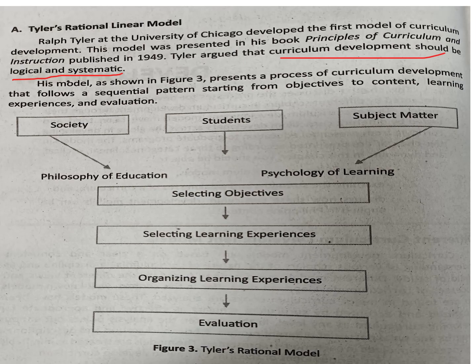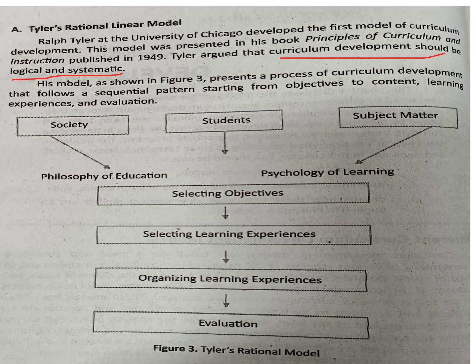In making Tyler's Rational Linear Model, we have to select the objectives. This means that a particular government agency, private school, university, or SUC governed by the Commission on Higher Education must select the objectives of a particular program. For basic education, this could first be formulated by identifying the vision, mission, goals, and objectives. Selecting objectives for every subject matter content is a different story.